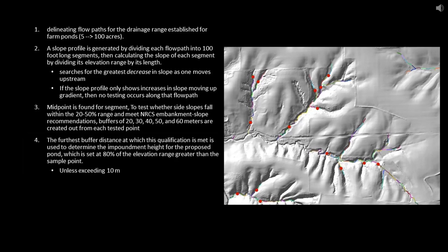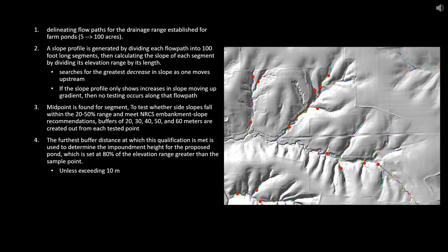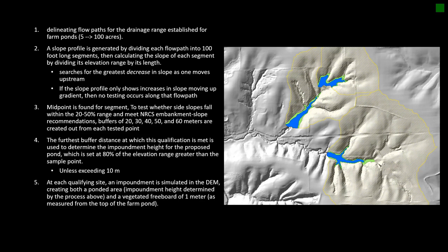The furthest buffer distance at which the qualification is met is used to determine the impoundment height. This will be set at 80% of the elevation range greater than that sample point. However, if that 80% value exceeds 10 meters, it is reduced to the maximum impoundment height of 10 meters. An impoundment is then simulated in the DEM, creating both a ponded area using the impoundment height and a vegetated freeboard of one meter as measured from the top of the farm pond. The drainage area is then delineated and statistics are found. The pond area must be between 0.25 and 8% of the contributing watershed, and the freeboard area cannot exceed the pond area. This allows suggested farm ponds to range between one-eighth and eight acres.